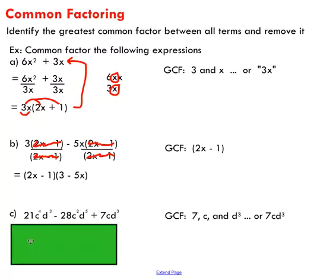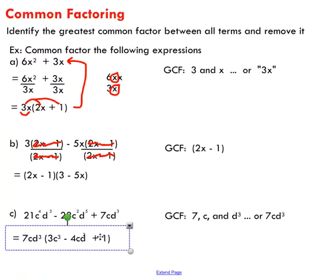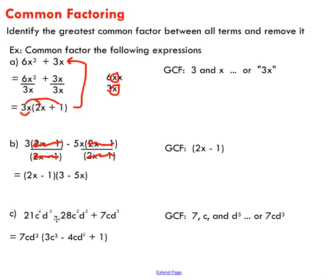Dividing each term by 7cd cubed: 21 divided by 7 is 3; c to the fourth divided by c gives c cubed using exponent laws; d cubed divided by d cubed is 1. For the second term: negative 28 divided by 7 is negative 4; c squared divided by c is c; d to the fifth divided by d cubed is d squared. Note: there's a typo in the first term's d portion — d cubed over d cubed should give 1, not a d term. And lastly, 7cd cubed divided by itself gives 1.